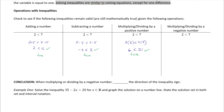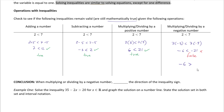Now let's try multiplying by a negative number: 2 × (−3) < 7 × (−3) gives −6 < −21. But wait — is −6 less than −21? No, that is false. So when you multiply or divide by a negative number, in order to preserve the accuracy of the inequality and maintain mathematical truth, you must flip the inequality sign.